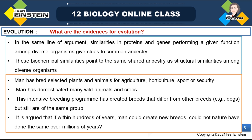Proteins and genes performing a particular function among different organisms also give a clue to common ancestry. This also shows a point towards ancestry — in diverse organisms, the same proteins and same genes are performing a particular function, which indicates a common ancestry.